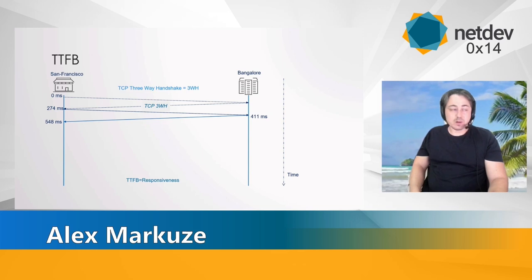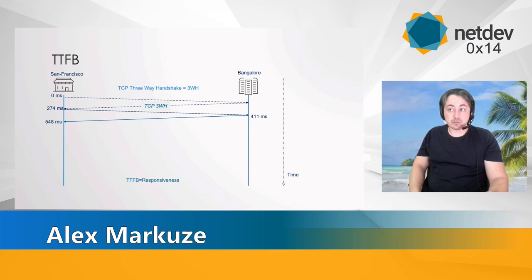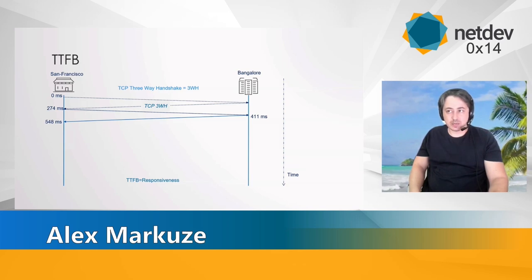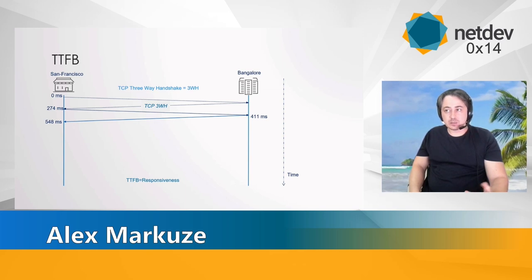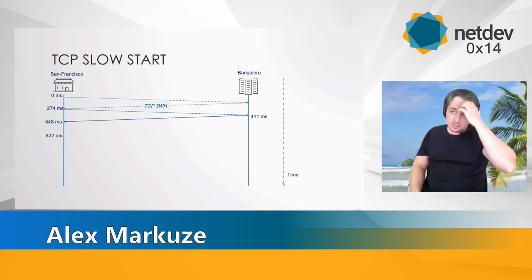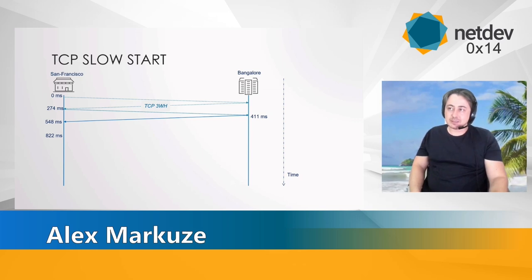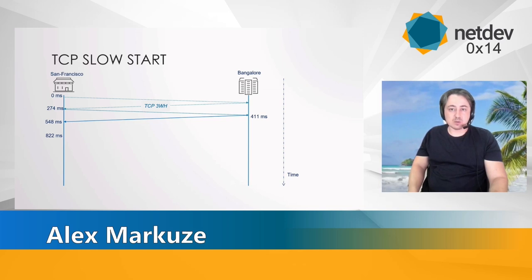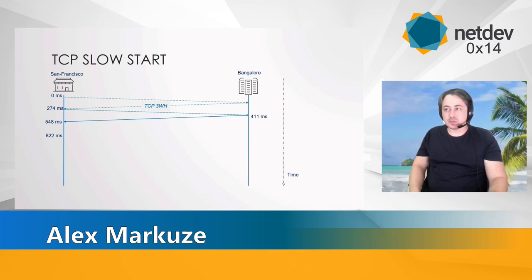It takes more than 500 milliseconds for the first bytes of the response to actually arrive. This time between when the connection was initiated and when the first bytes of the reply arrive is called time to first byte, and corresponds to the responsiveness of the site you're visiting. Half a second is a lot. TCP is by design trying to be nice to other flows and builds up its speed slowly — that's called TCP slow start.